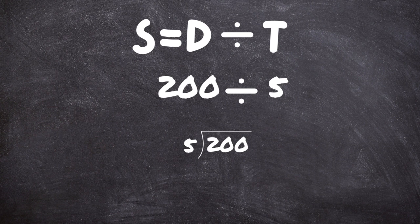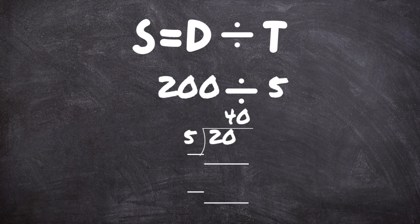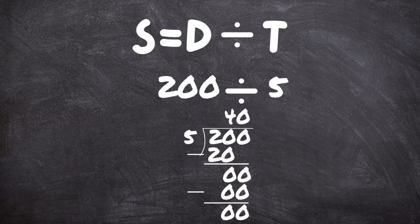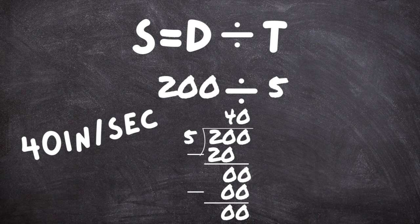So, to find the speed, we'll take 200 divided by 5. Why don't you hit the pause button for a minute so you can divide and see what you get. Alright. Did you get 40? That means Snoopy's speed is 40 inches per second. That means, if he continues to travel at that speed, he will go 40 inches every second.